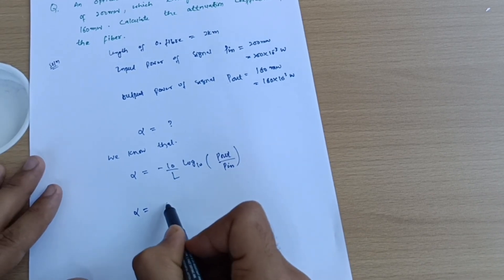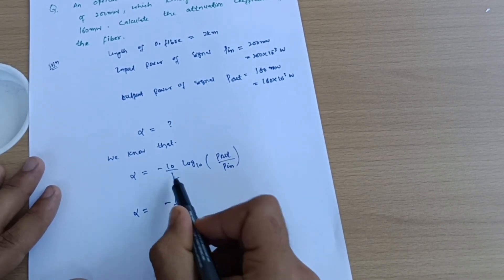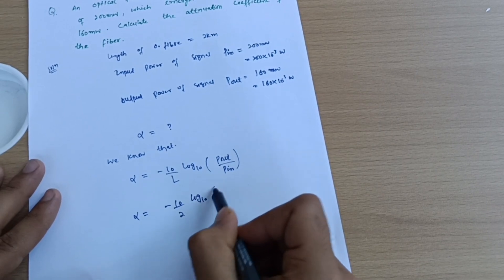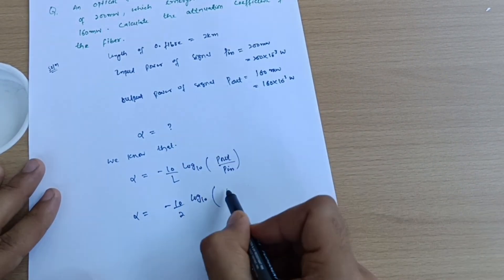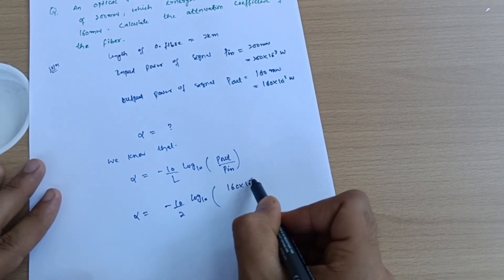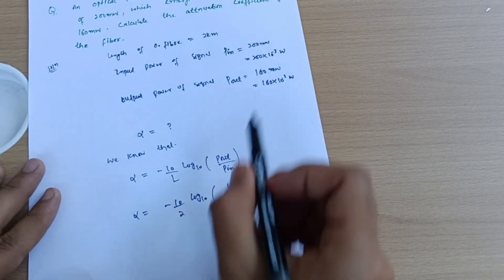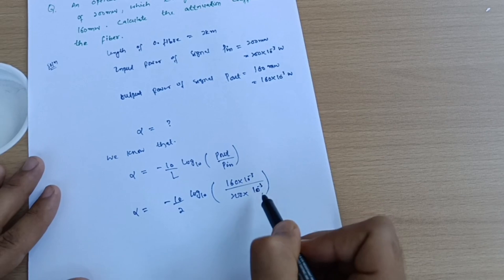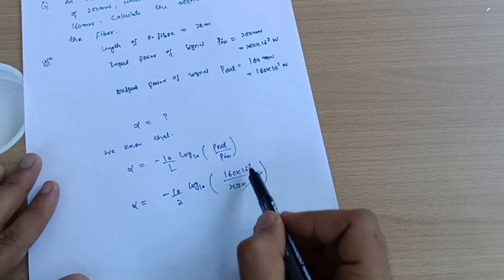Write down the values accordingly. Alpha is equal to minus 10 upon length - length is 2 kilometers - so 2, log of 10, P_out - how much is P_out? 160 into 10 power minus 3 - divided by P_in - P_in is 200 into 10 power minus 3. Hope you are getting my point. So this 10 power minus 3 and 10 power minus 3 gets cancelled. Alpha is equal to - now I have to calculate this much in the calculator.